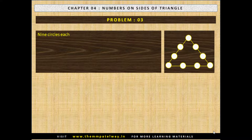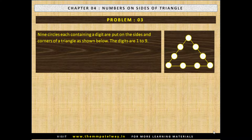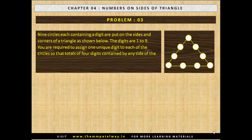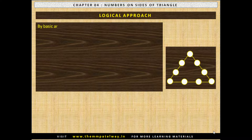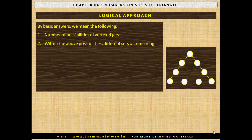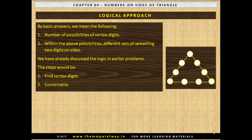Problem number 3. Nine circles each containing a digit are put on the sides and corners of a triangle. The digits are 1 to 9. You are required to assign one unique digit to each of the circles so that the total of 4 circles on any side of the triangle equals 17. How many basic answers are possible? By basic answers we mean the number of possibilities of vertex digits, and within each possibility, different sets of the remaining 2 digits on each side. The steps are: find vertex digits, then find combinations of 4 digits for each side.